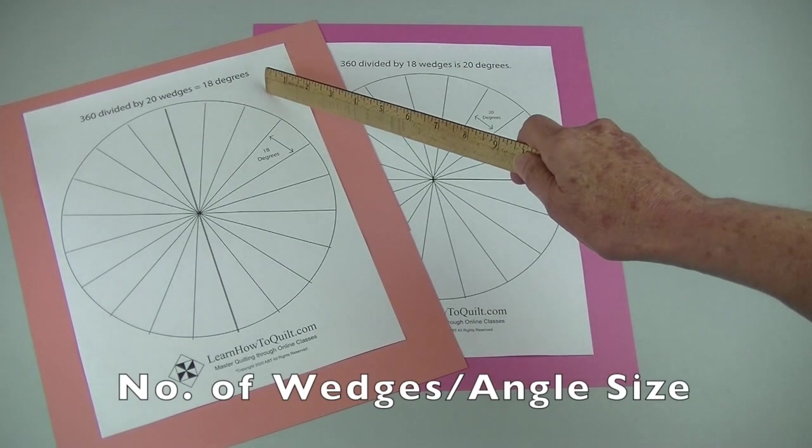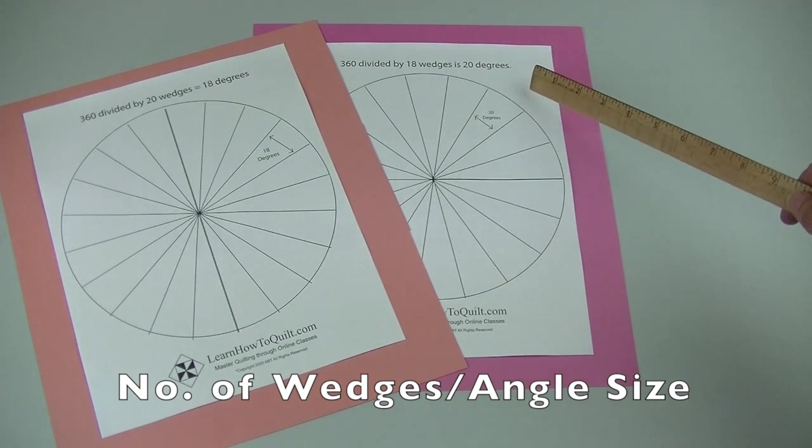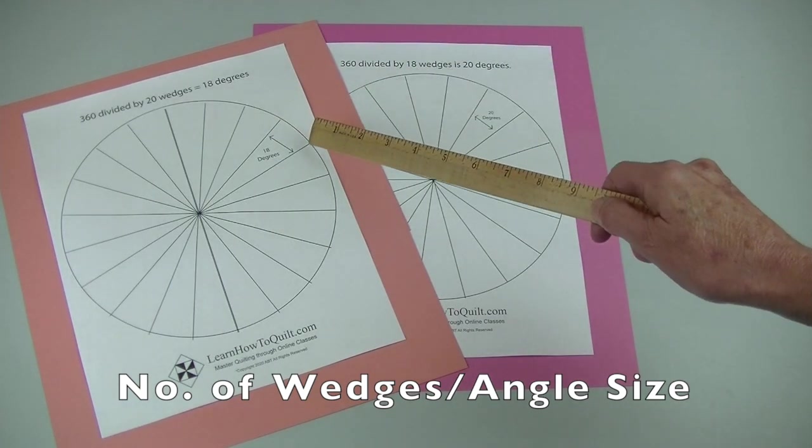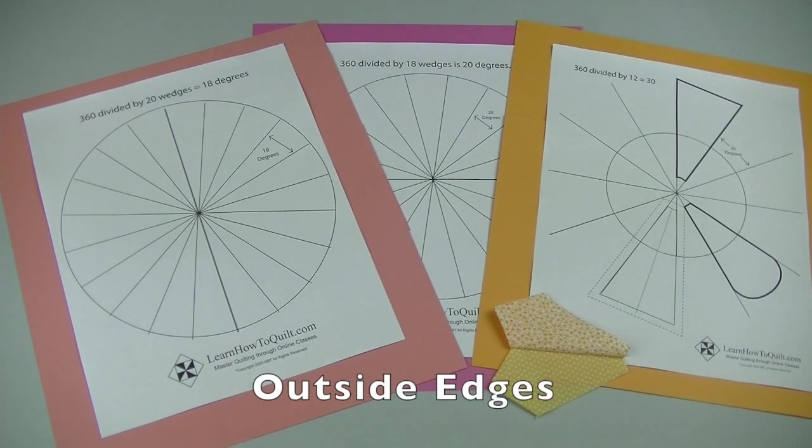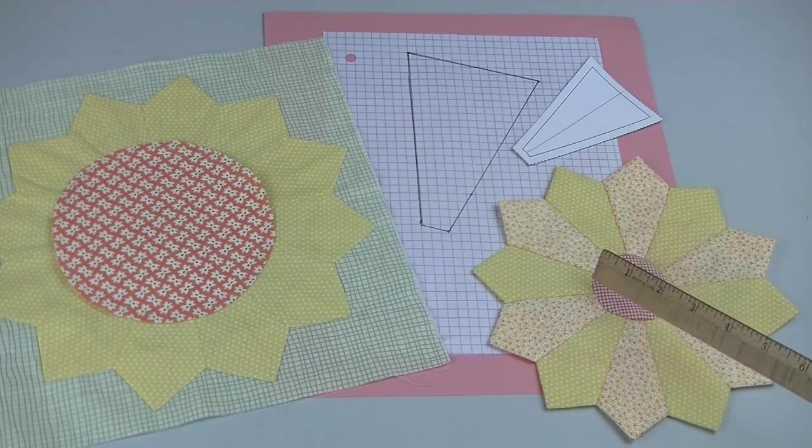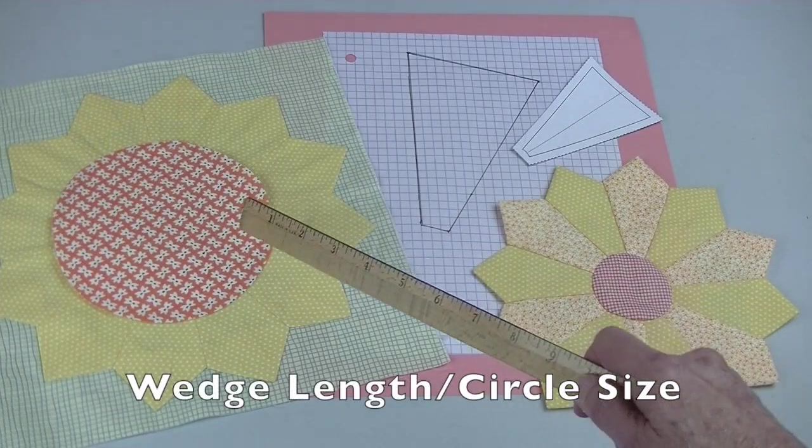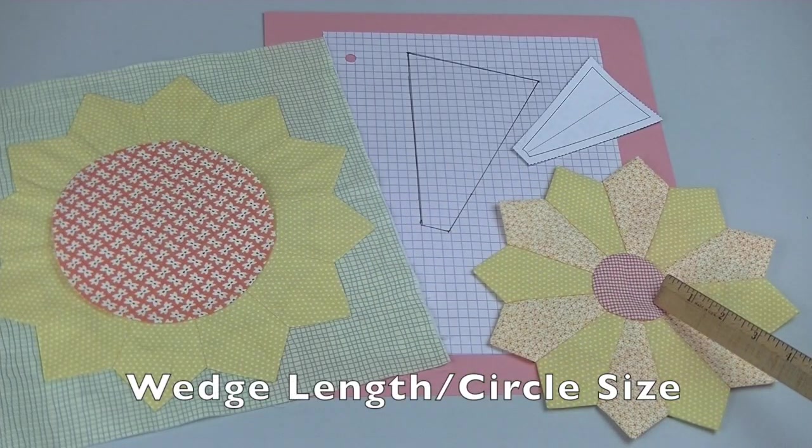You can change the number of wedges in your circle, which in turn will change the angles of each one of these wedges. You can also change the outside edges of your pattern. The lengths of the wedges and the sizes of the inner circles can also vary.